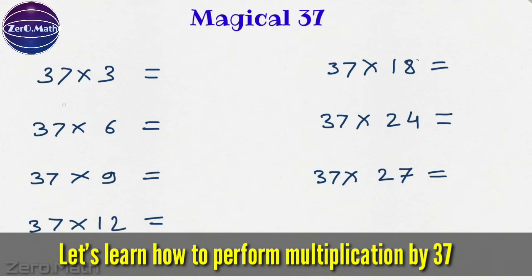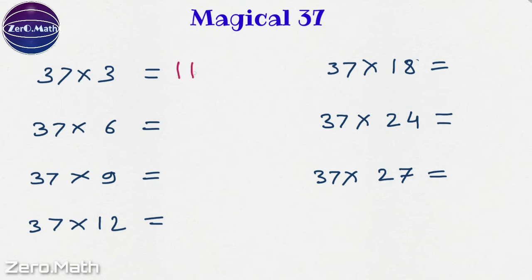Let's learn how to do multiplication by 37 now. So we know that 37 times 3 is 111. So what is 37 times 6? Well, it's very simple. Just divide this 6 by 3, we will get 2. Write this 2 three times. And that's our answer.